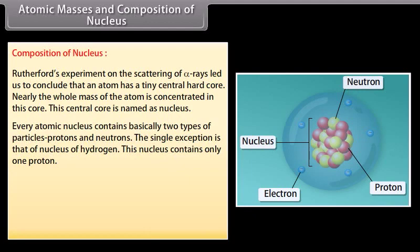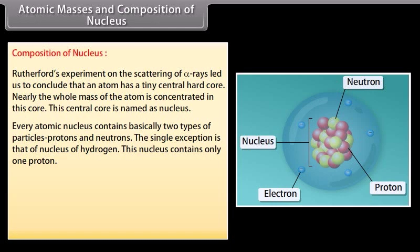Every atomic nucleus contains basically two types of particles: protons and neutrons. The single exception is that of nucleus of hydrogen. This nucleus contains only one proton. The total number of protons in atomic nucleus is equal to total number of electrons in atom. So, the total amount of negative charge present in atom is equal to the total amount of positive charge in the atom. This makes the atom, as a whole, electrically neutral.